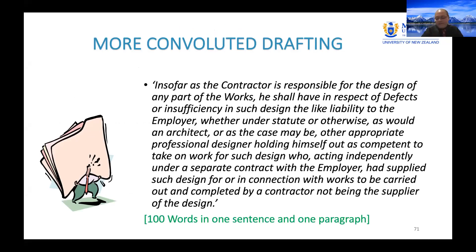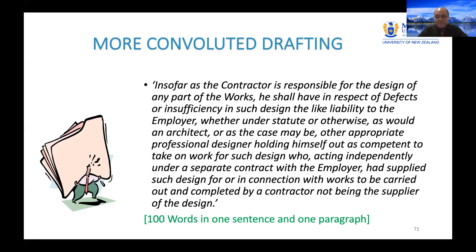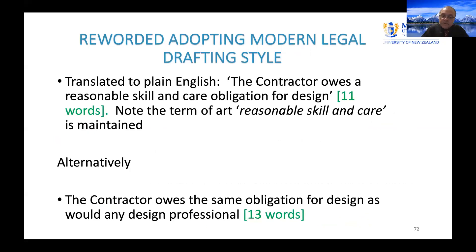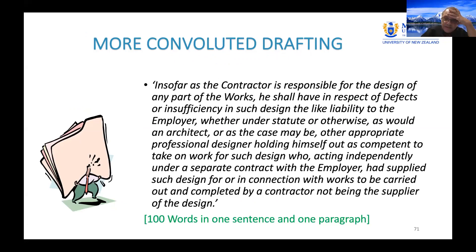A favourite example of how not to draft comes from the JCT design and build contract — 100 words in one sentence starting 'insofar as the contractor is responsible for the design...' How are we going to learn principles of construction contracts if this is what we're dealing with over five days? I'm sorry — it can't be done. What I'm going to do is use a plain language contract with clauses like 'the contractor owes the reasonable skill and care obligation' — then I can explain what reasonable skill and care means, and focus on the legal principles rather than deciphering the drafting.